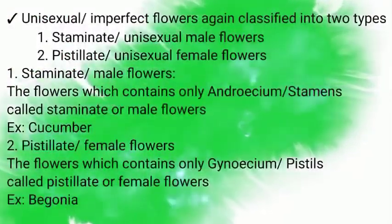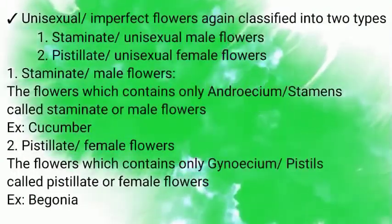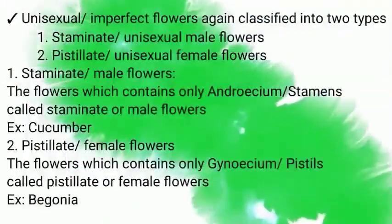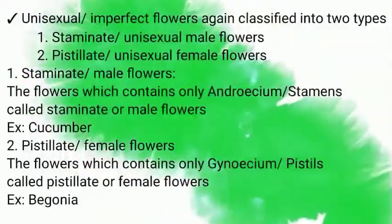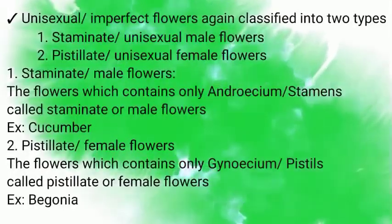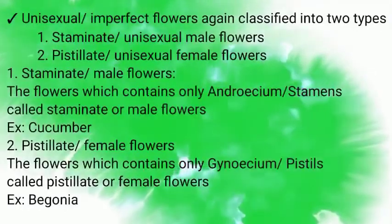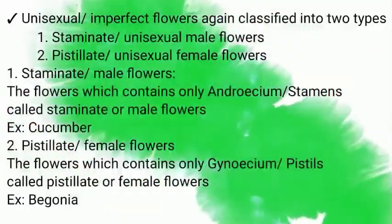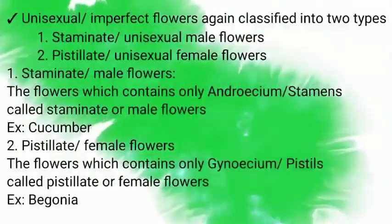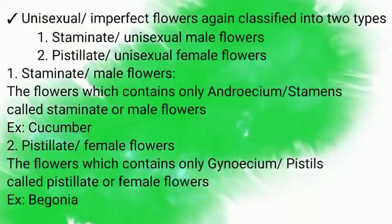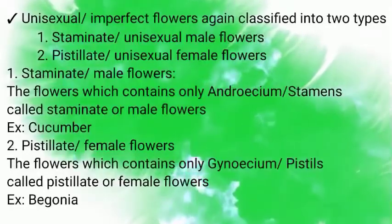Unisexual or Imperfect Flowers are again classified into two types: Number one, Staminate or Unisexual Male Flowers — flowers which contain only Androecium or stamens, example Cucumber; and Number two, Pistillate or Unisexual Female Flowers — flowers which contain only Gynoecium or pistils, example Begonia.